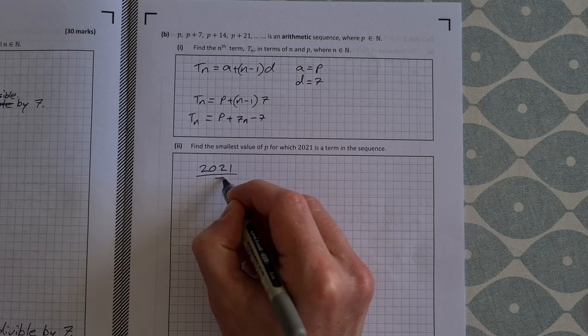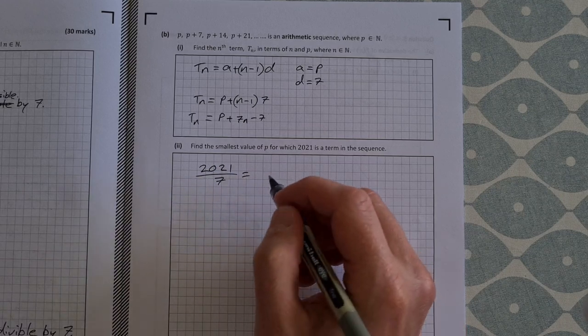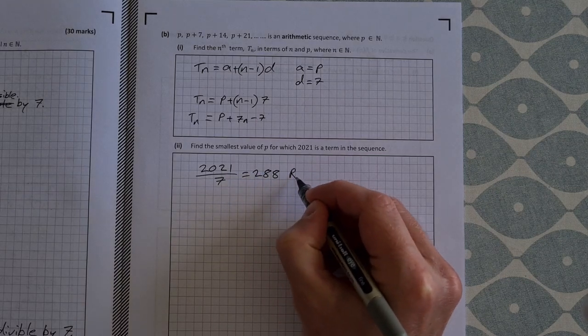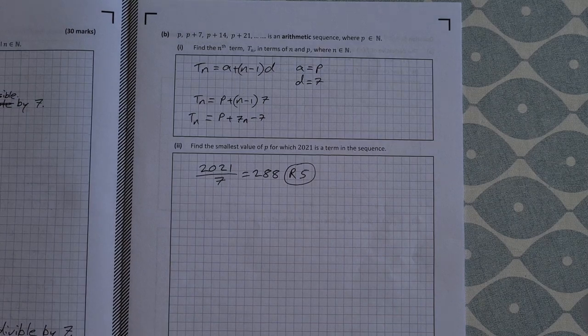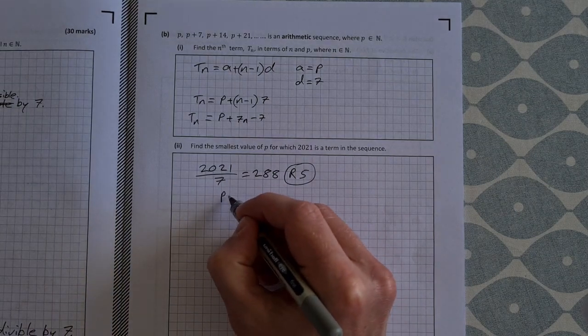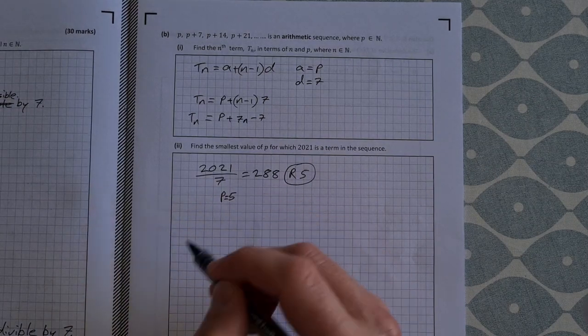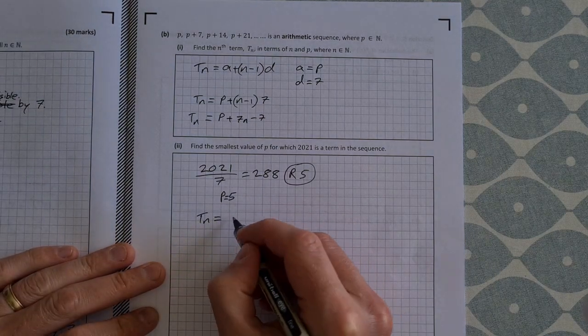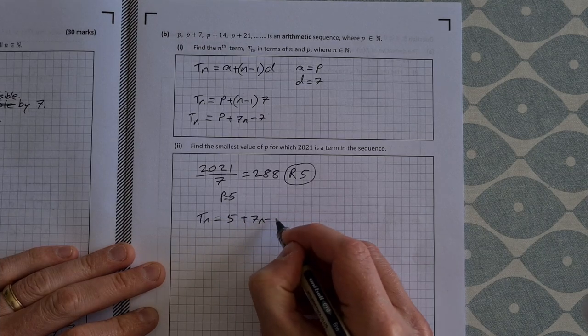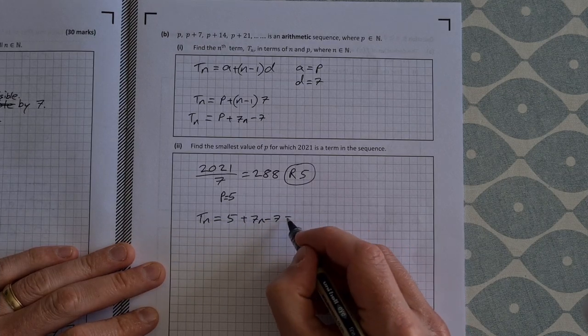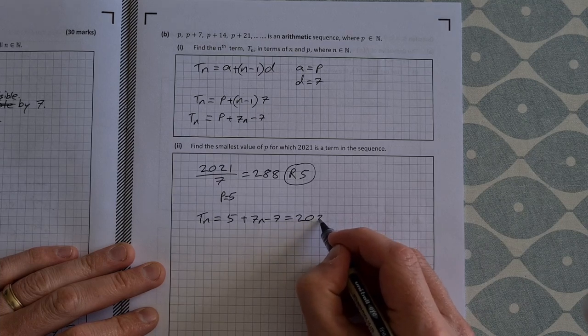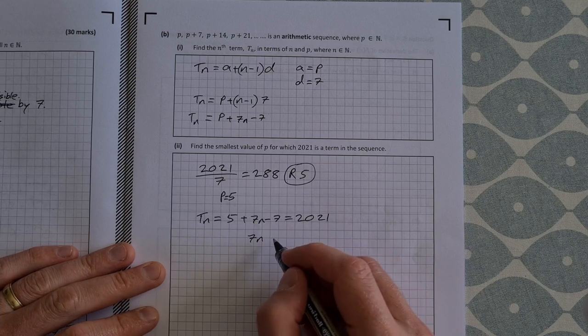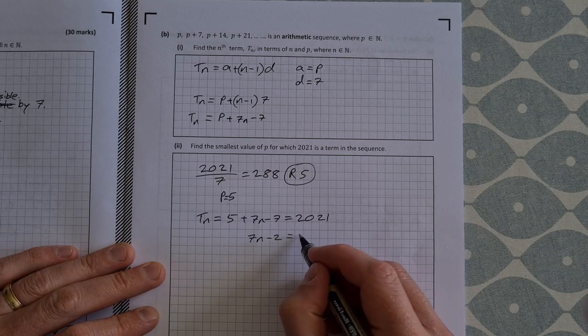So all you need to do for this is take 2021 and divide it by 7, and you get 288 with a remainder of 5. So a remainder of 5. So that means p is equal to 5, and I'll show you how that is now. So if we sub in 5, we have t of n is equal to 5 plus 7n minus 7, and we want that to be equal to 2021. So 7n minus 7 plus 5 is minus 2, is equal to 2021.